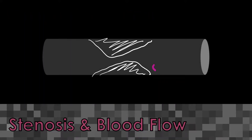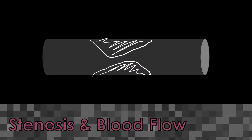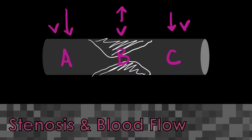Let's review what the stenosis causes through images. Change in direction of flow: as laminar flow enters into the stenosis, it must change direction not only in the stenosis but then after the stenosis. The flow must increase in velocity through a stenosis, so in this diagram, spot B has the highest velocity compared to spots A and C.